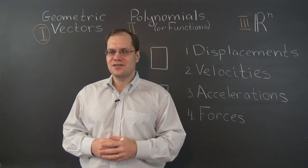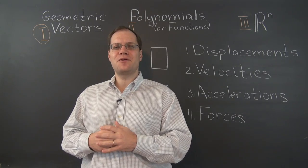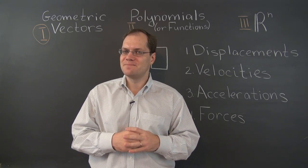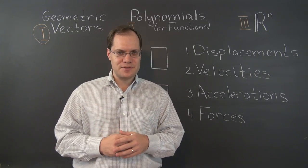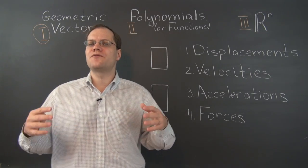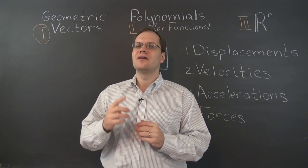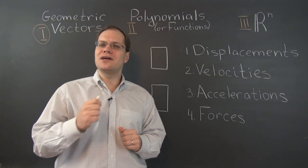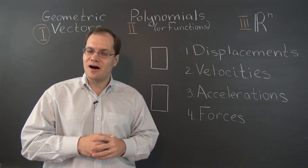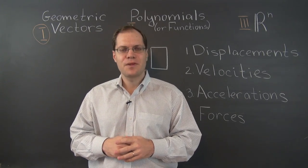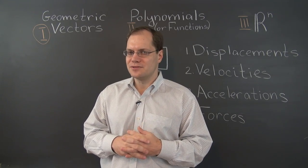So far we have used displacements, or relative locations between points, as our intuition for what geometric vectors represent. We have used our intuitive understanding of how displacements work to come up with our rules for adding geometric vectors and multiplying them by numbers. Now we're wondering: what else works like geometric vectors? What other kinds of objects can be thought of as directed segments and satisfy the same rules for addition and multiplication by numbers?